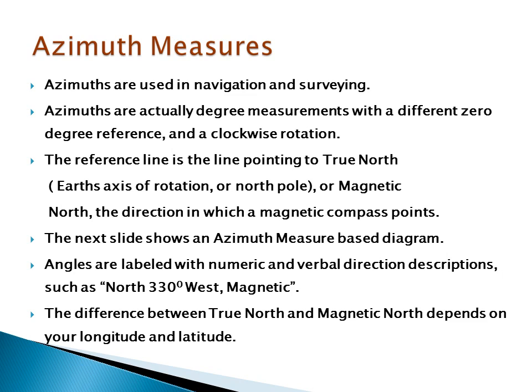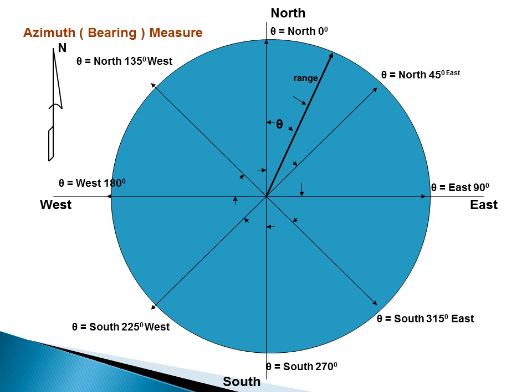Azimuth measures are used in navigation and surveying. They are actually degree measurements with a different zero-degree reference and a clockwise rotation. The reference line is the line pointing to true north or magnetic north — the direction in which a magnetic compass points. The difference between true north and magnetic north depends on your longitude and latitude. Angles are labeled with numeric and verbal directions such as north, 330 degrees west, magnetic.